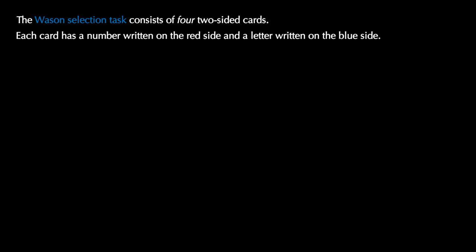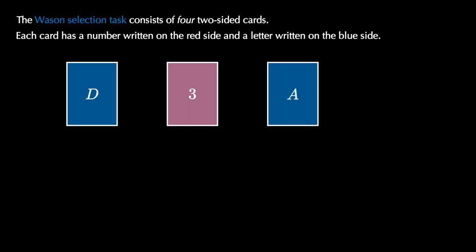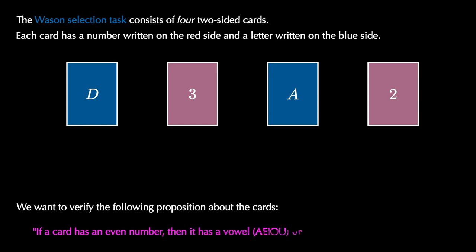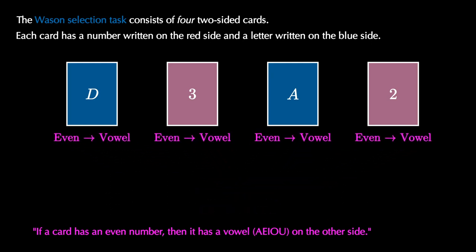Let's use our knowledge of the conditional connective to revisit the Wason selection task. Recall that the task presents us with four two-sided cards — each has a number on the red side and a letter on the blue side. We can see D, 3, A, and 2 face up. Our task is to figure out if the proposition 'if a card has an even number, it has a vowel on the other side' is true by turning over two cards.